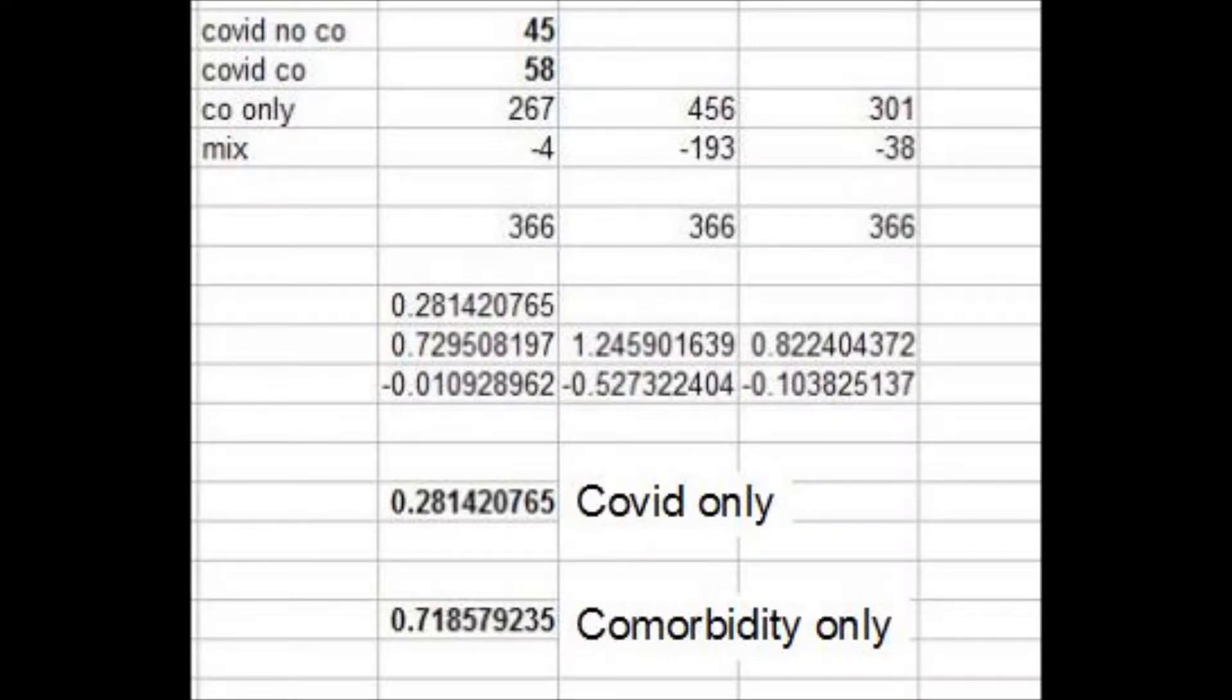About 72% of the deaths in this period are probably comorbidity deaths in disguise. This is down from 83% based on the numbers from July to October. We shall see how these trends develop.